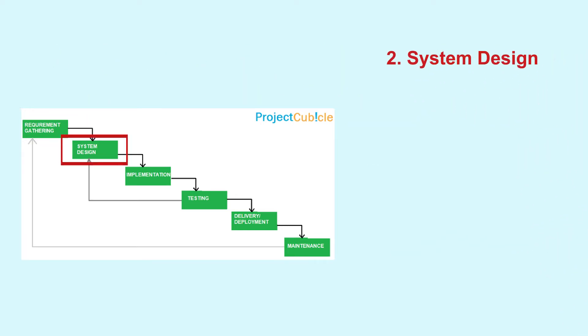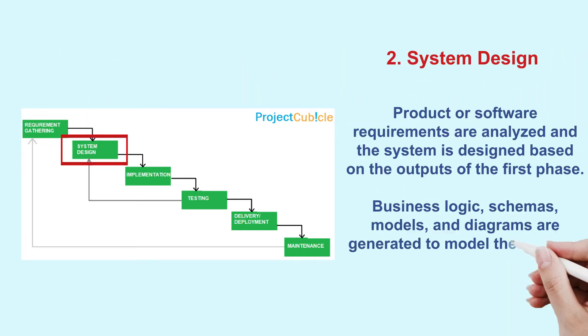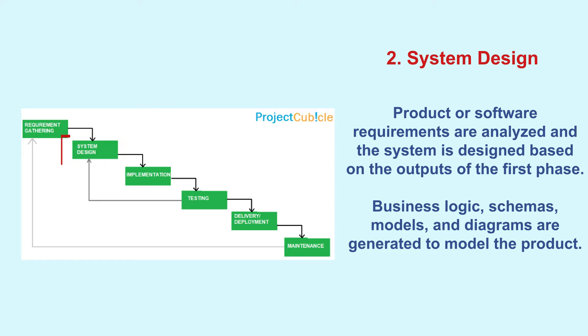In the system design phase, the product or software requirements are analyzed and the system is designed based on the outputs of the first phase. Business logic, schemas, models, and diagrams are generated to model the product.